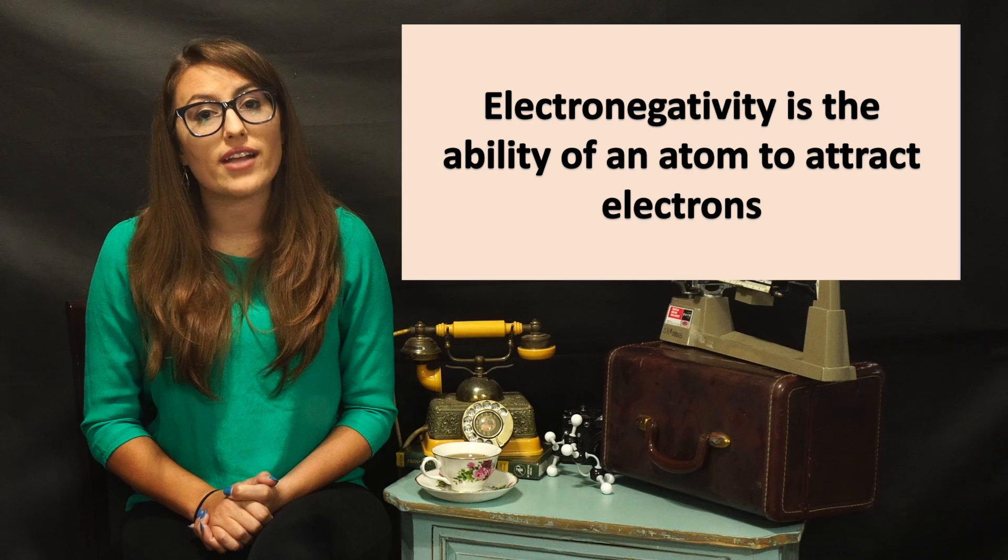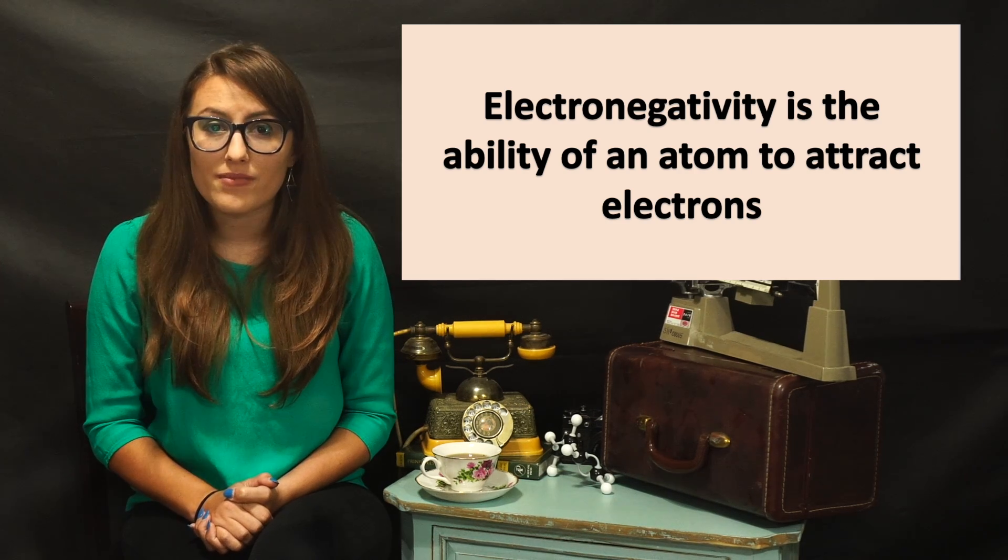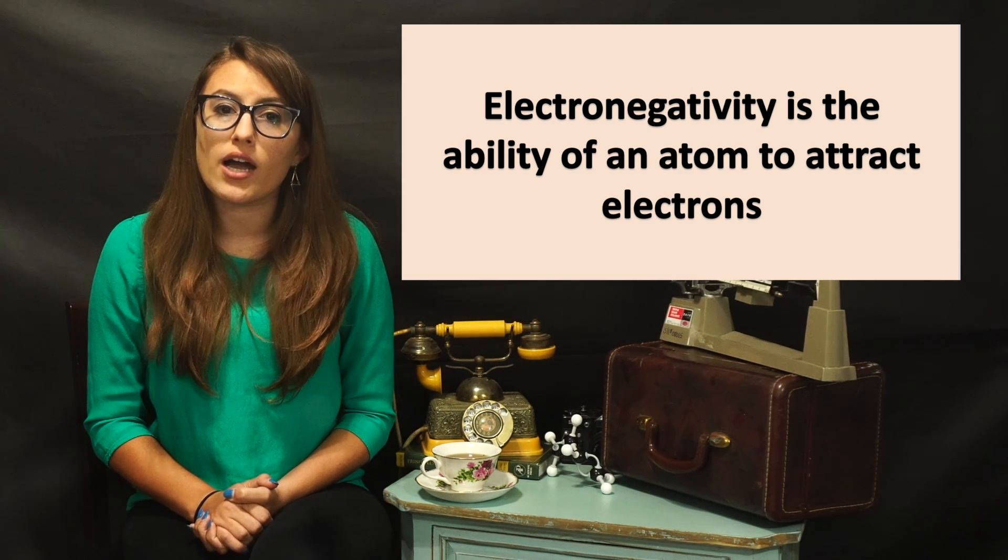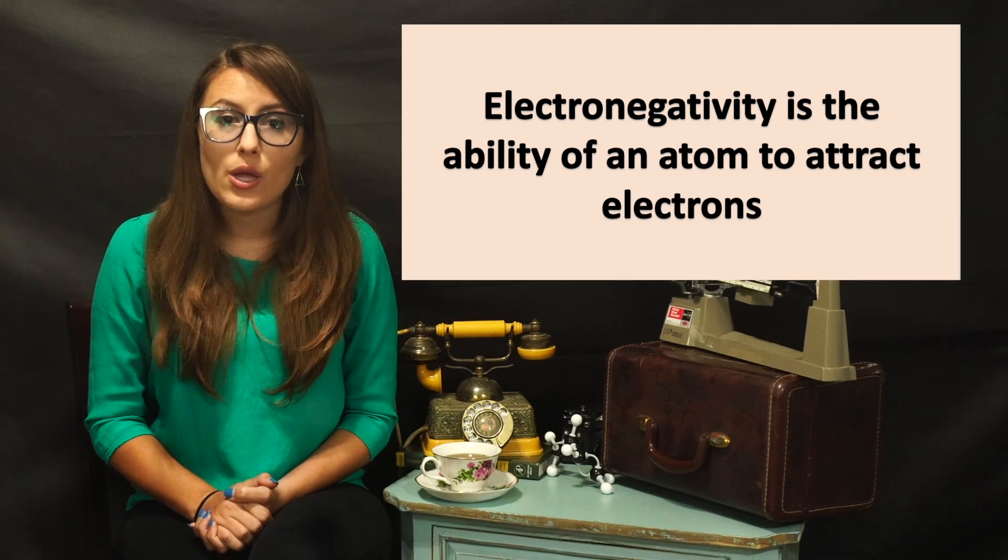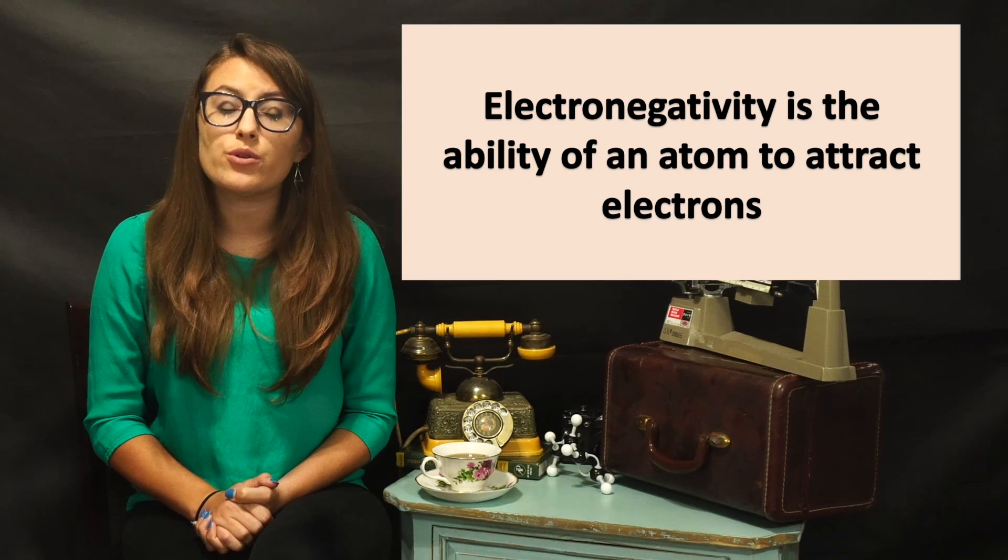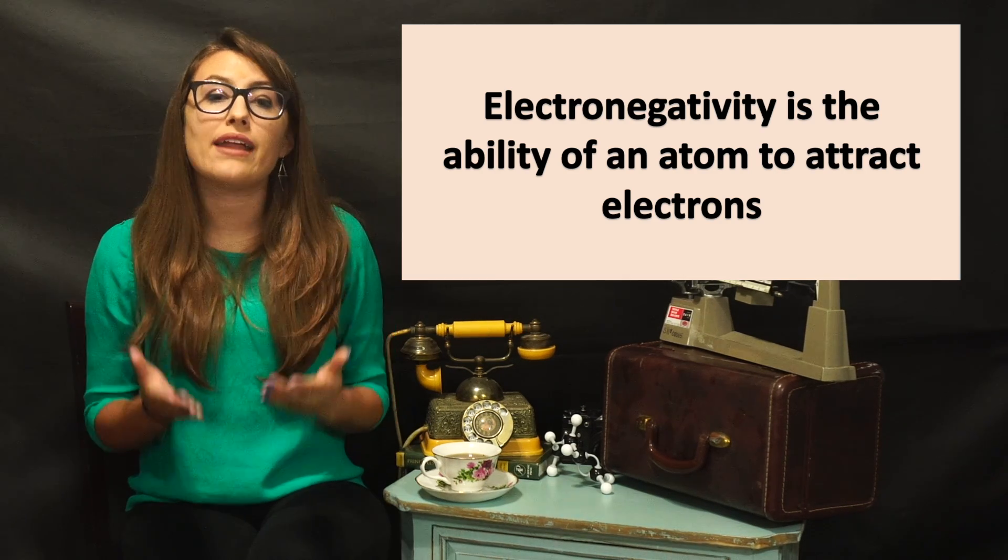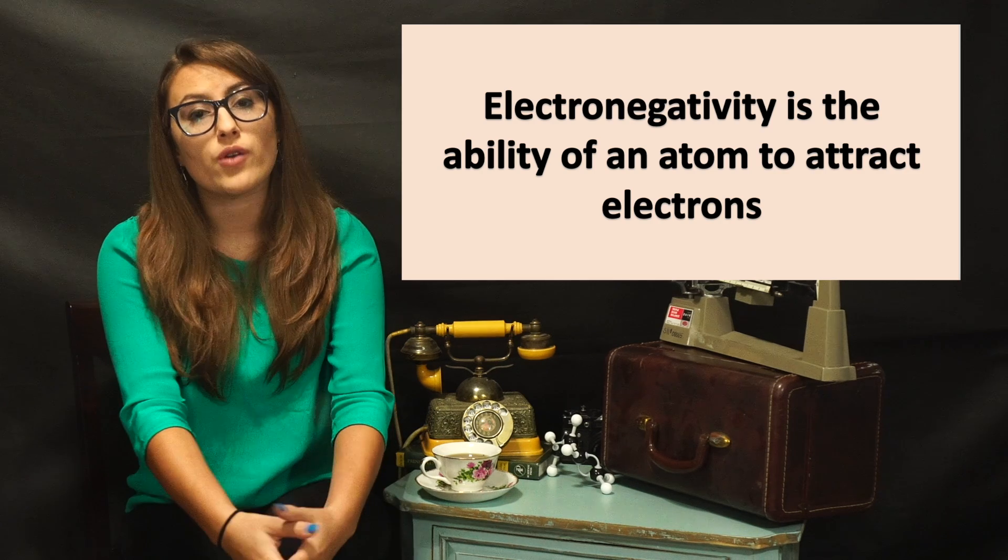In the context of bonding, the ability of an atom to attract electrons is known as electronegativity. Atoms want to form bonds in order to complete the octet, which may cause the unequal sharing of electrons depending on the ability of an atom to attract them.